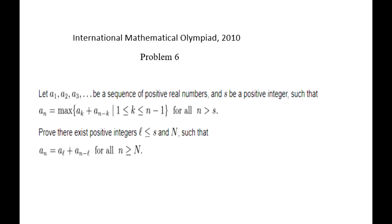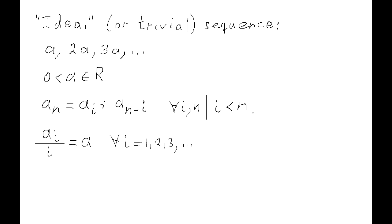I will explain one of the official proofs of this problem, which is quite elegant. Let's first examine a special type of infinite sequence of positive real numbers shown on the diagram: a, 2a, 3a, etc. We will call such a sequence ideal or trivial, because each member with index n equals the sum of a_i plus a_{n-i} for each i less than n. Equivalently, an ideal sequence is one in which the ratio of each member's value to its index is constant throughout.